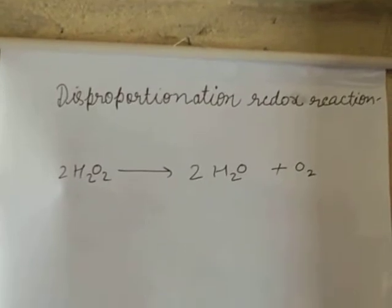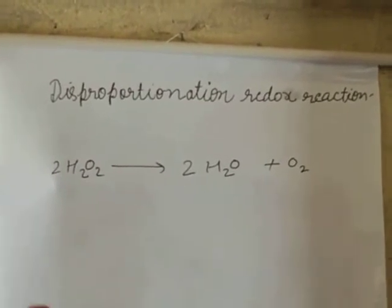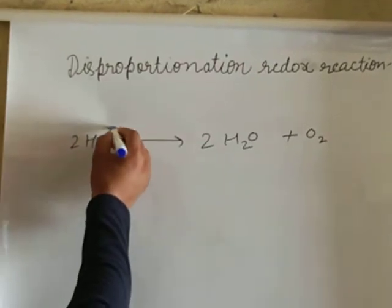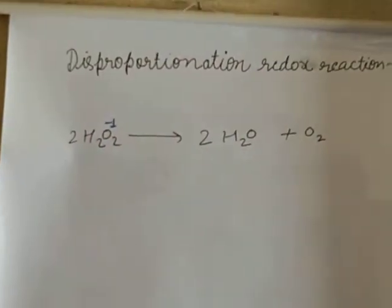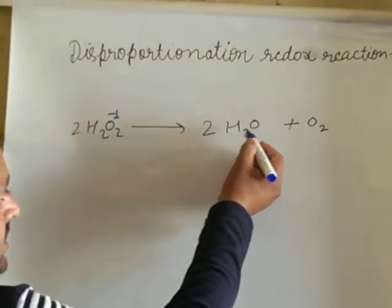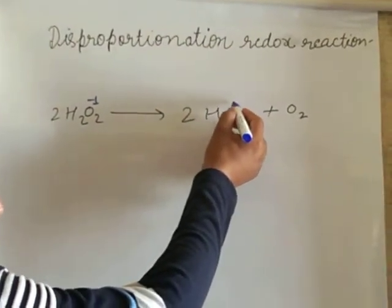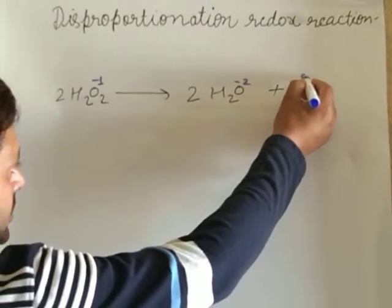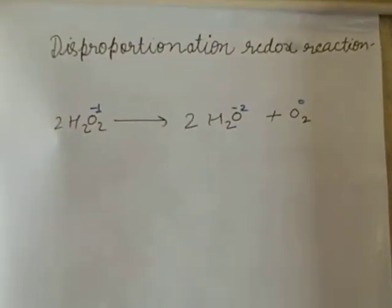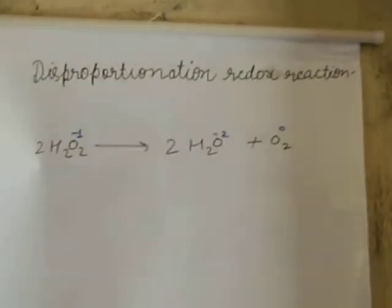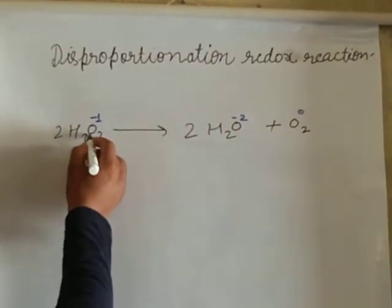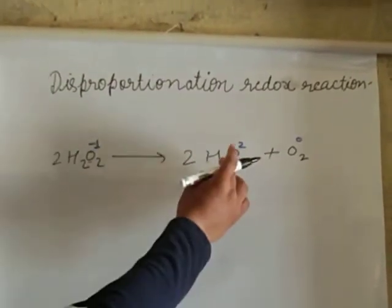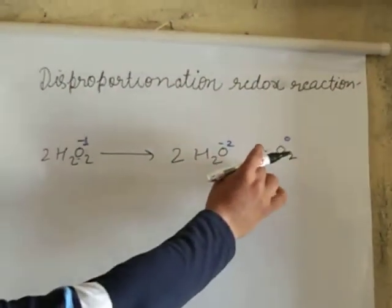I will write the oxidation state of oxygen. The oxidation state of oxygen is minus 1 in peroxide, so here it is minus 1, and there are 2 oxygens. In normal case, the oxidation state of oxygen is minus 2. In free state, it is 0. You may notice that oxygen goes from minus 1 to minus 2 and 0.